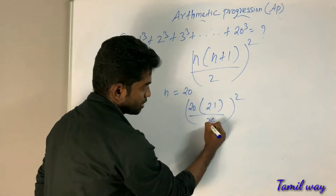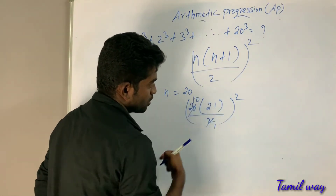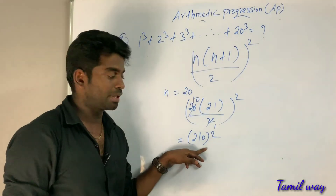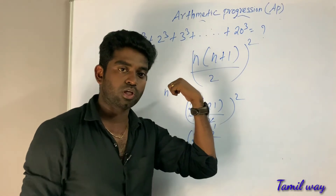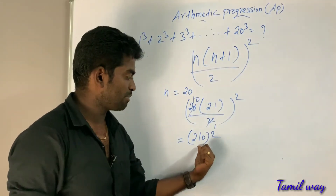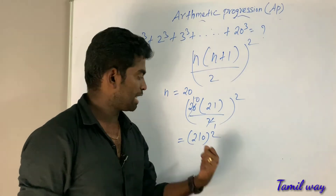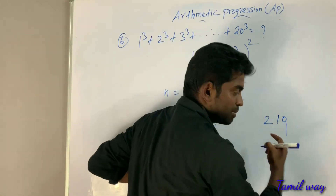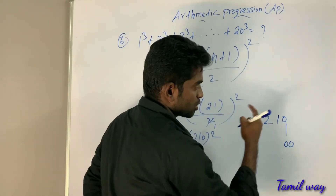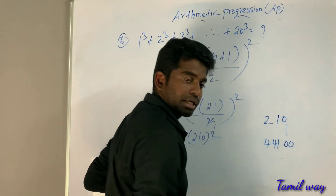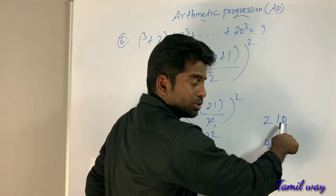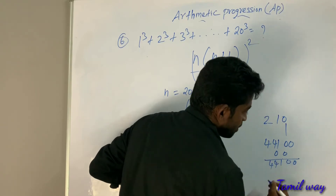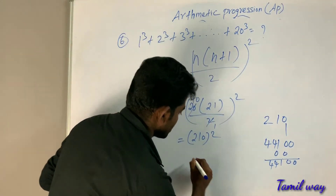Now we square 210. 210 squared equals 44,100. So the answer is 44,100. For squaring, the instructor references a previous class on how to solve square roots easily — check the description or previous video.